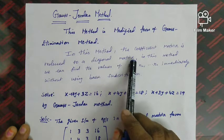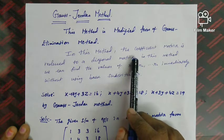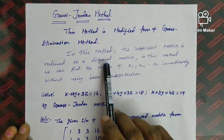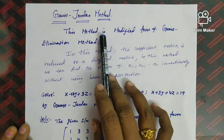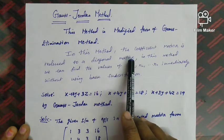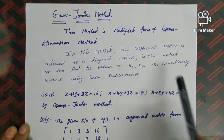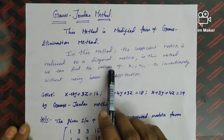In the Gauss elimination method, row operations produce an upper triangular matrix. In the Gauss-Jordan method, we obtain a diagonal matrix instead. After getting the diagonal matrix, there is no need for back substitution — directly we can get the answers for the given system of equations.